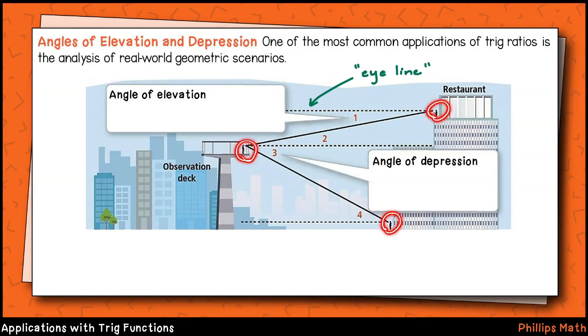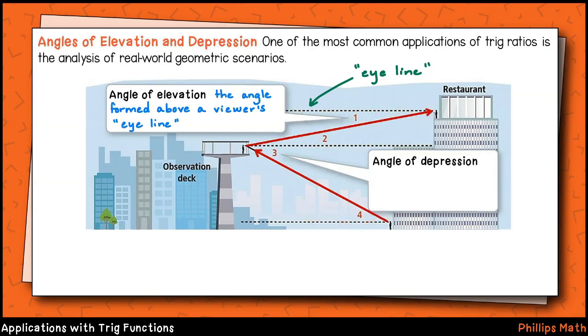In the figure, notice that we have three people, observers, standing at various heights. We have one here on the ground, one at the top of an observation deck, and a third at the balcony of a rooftop restaurant. In each case, we see that there are three sets of dashed lines parallel to the ground and at the observer's eye line. If the observer looks upward, as shown with the lines highlighted red, we refer to the angle relative to the eye line as an angle of elevation.